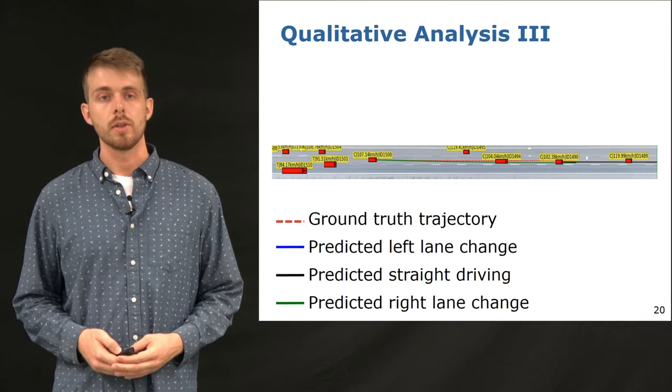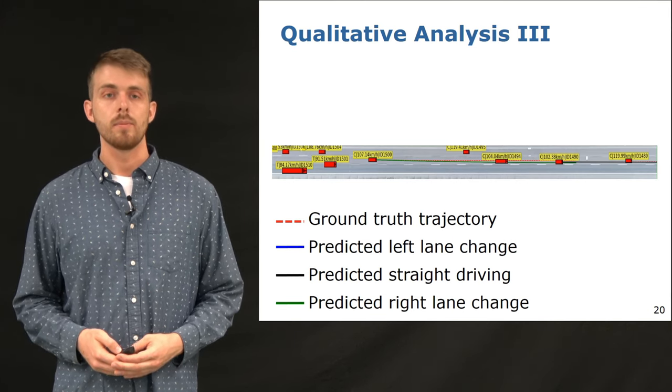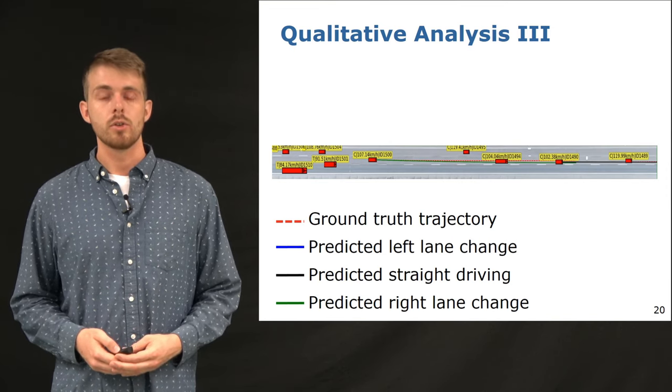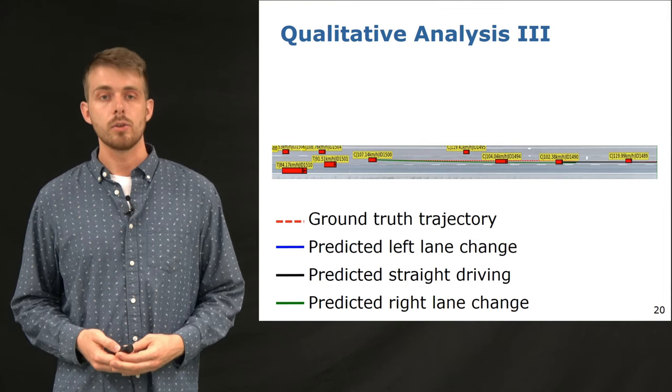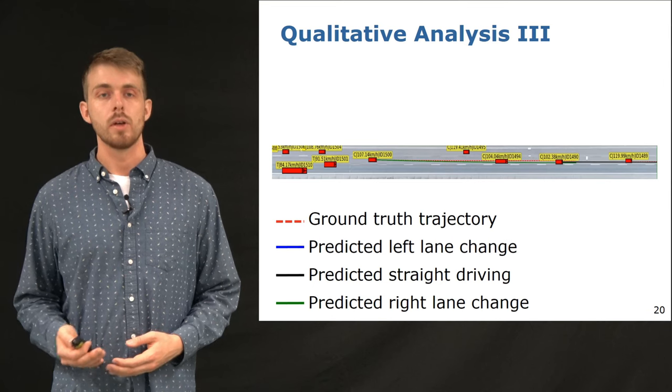And the same applies for this car that merges back into the middle lane after overtaking the slower car. Our method correctly predicts the right lane change, but at the same time considers merging to the rightmost lane, since it is not occupied. After some time, the prediction converges to a lane keeping behavior.